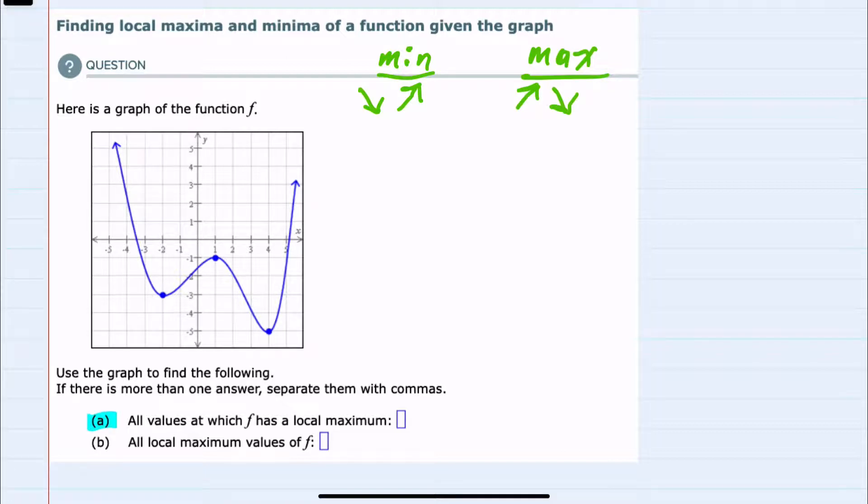So for part a, all values at which f has a local maximum, we can see that a local maximum where it is moving up and then it begins to move down would happen here. So that would be a local maximum. And looking at a, it says the values at which f has a local maximum. So that would be the x values. There is a local maximum when x is 1.